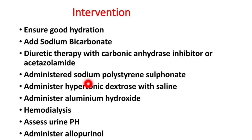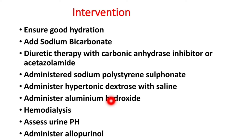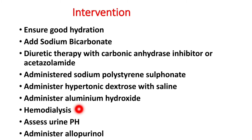Administer sodium polystyrene sulfonate through the bowel to remove potassium. Administer hypertonic dextrose with saline to help shift potassium into the cells. Administer aluminum hydroxide to remove excessive phosphate through the bowel. Hemodialysis is an alternative treatment. Administer allopurinol, which helps prevent the formation of uric acid, ultimately preventing kidney injury. Monitor urine pH to check whether the urine is getting alkalized.